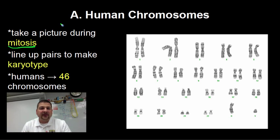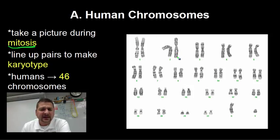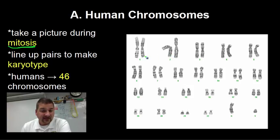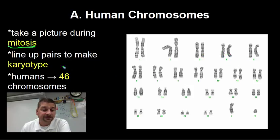They take a picture of it and they can stain it. You see different banding patterns and different sizes. Scientists will actually cut them out, or on the computer just trace around them, and they will match them up based on size and banding patterns. The picture you get of the human chromosomes is what we call a karyotype.